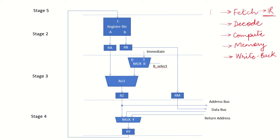In the second stage, the instruction is decoded and the source operands are read from the register file and put in inter-stage registers RA and RB. In the third stage, these source operands are passed to the ALU where the required computation takes place. The result is available in inter-stage register RZ. In the fourth stage, which is memory access, the address is sent on the address bus and the data bus is used to get operands. Data brought from memory is available in RY at the end of stage 4.